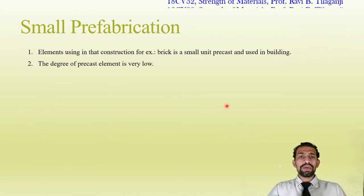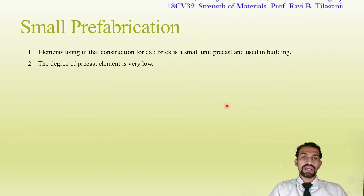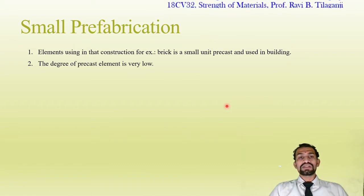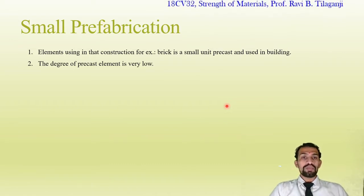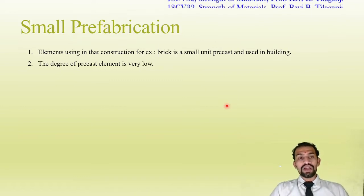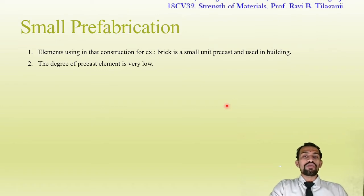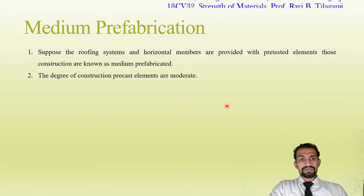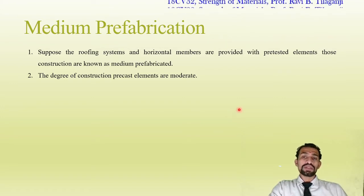Small fabrication: normal bricks are one example of precast materials we use even in conventional methods. This is one of the small prefabricated materials used as a building material, representing the smallest degree of precast with a very low limit.